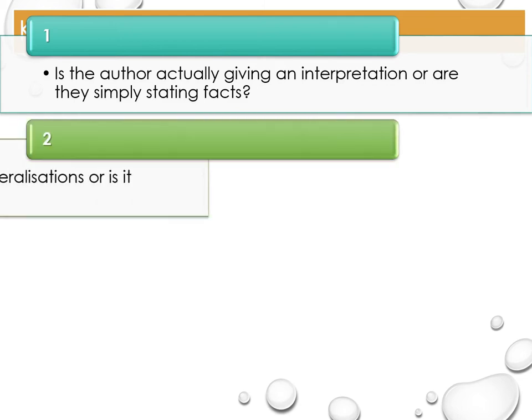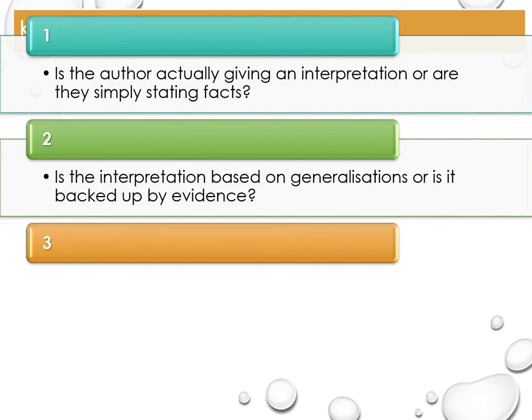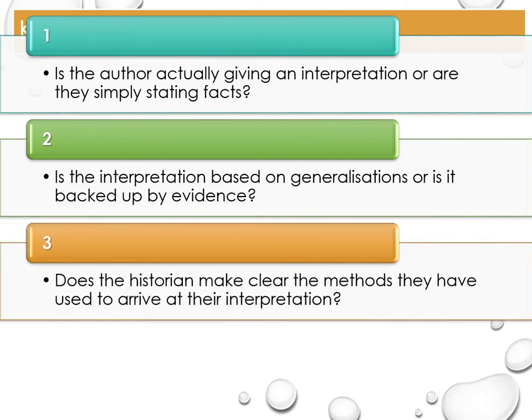Question 2: Is the interpretation based on generalisations, or is it backed up by evidence? Does the historian make wide general statements about events, individuals or groups? Question 3: Does the historian make clear the methods they have used to arrive at their interpretation? Has the historian made it clear what criteria they are using to reach their judgement? How is the evidence they are using forming their ideas?